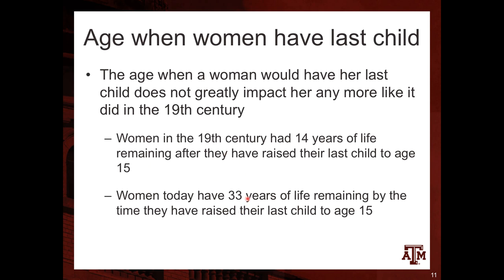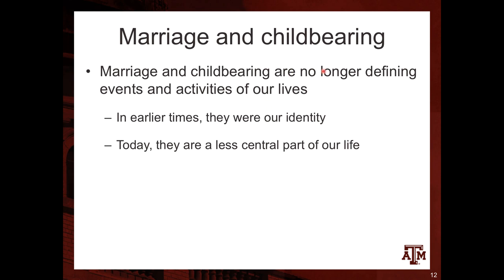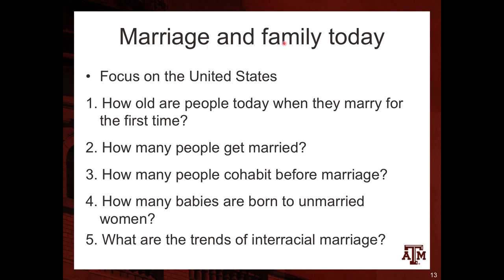This is a huge change connected to the decline in fertility rates — by the time children reach age 15, women still have a long time in their life. It's a connection between lower fertility, having fewer children, and lower mortality, since women now live longer. In terms of marriage and childbearing, they are no longer defining events — in earlier times getting married and having children were central to someone's identity, but today they are less central to people's lives.